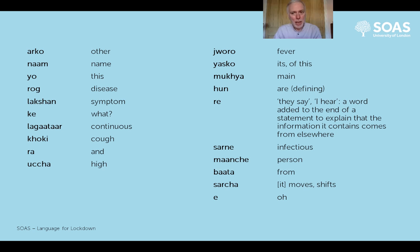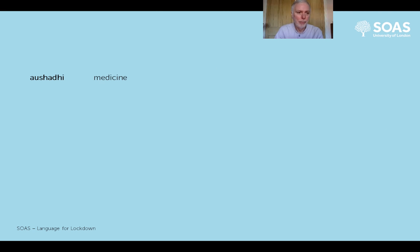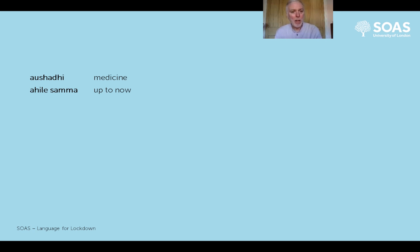'E' is the Nepali equivalent of 'oh' or 'oh, I see'. 'Oshati' is a noun meaning 'medicine'. 'Ahile samma' - 'ahile' by itself means 'now', in the present time. 'Samma' means 'up to' in a range of different contexts, but here it means 'up to now', so it can mean something like 'yet'.